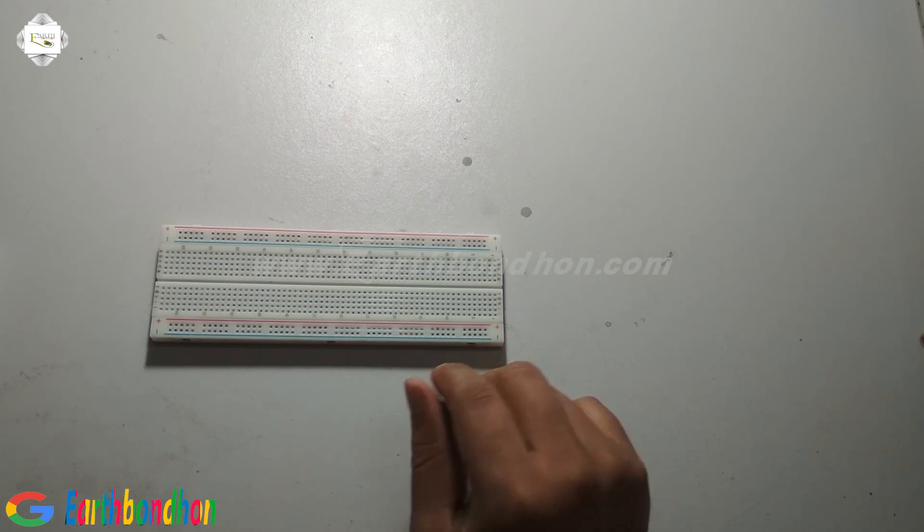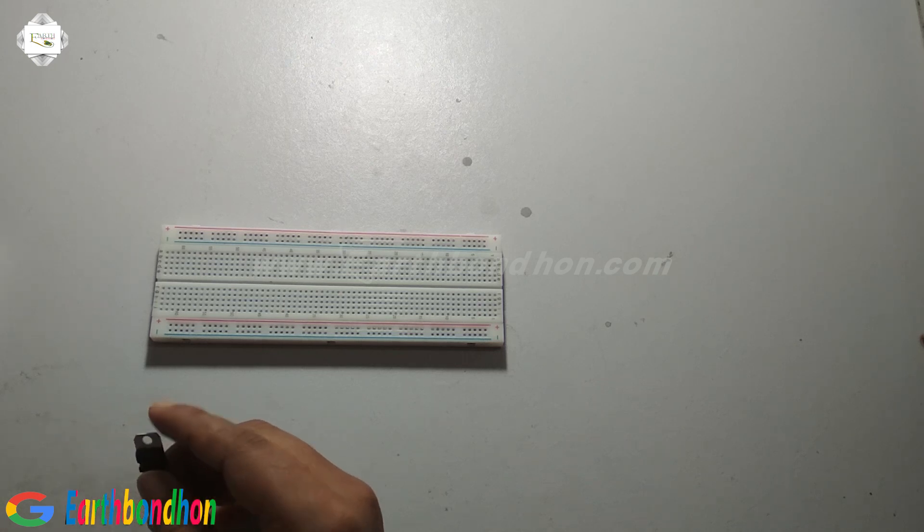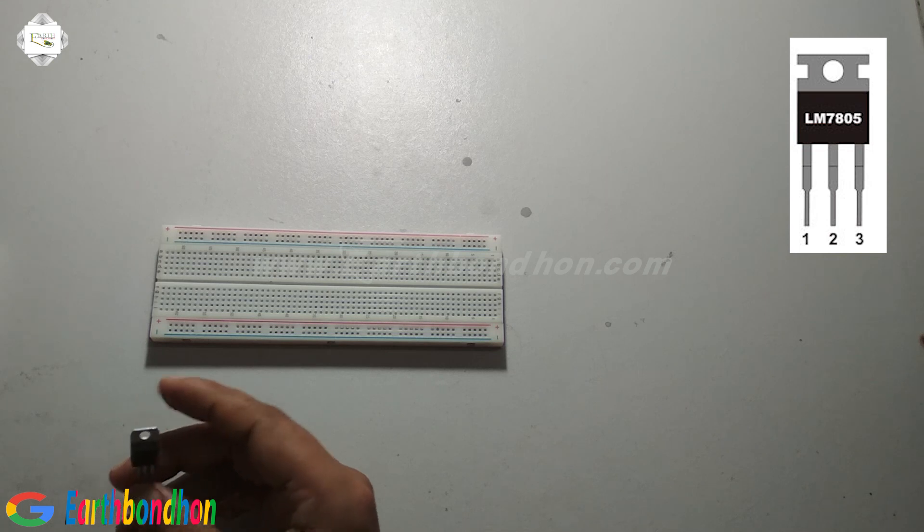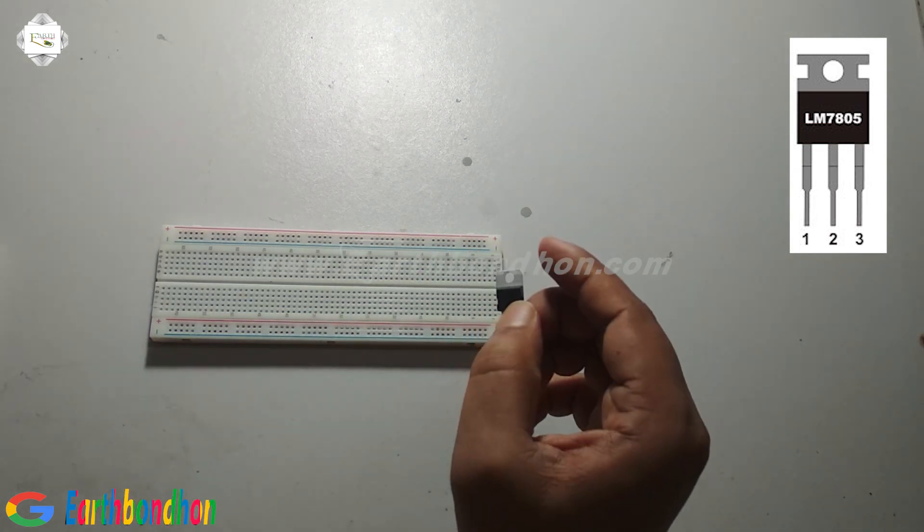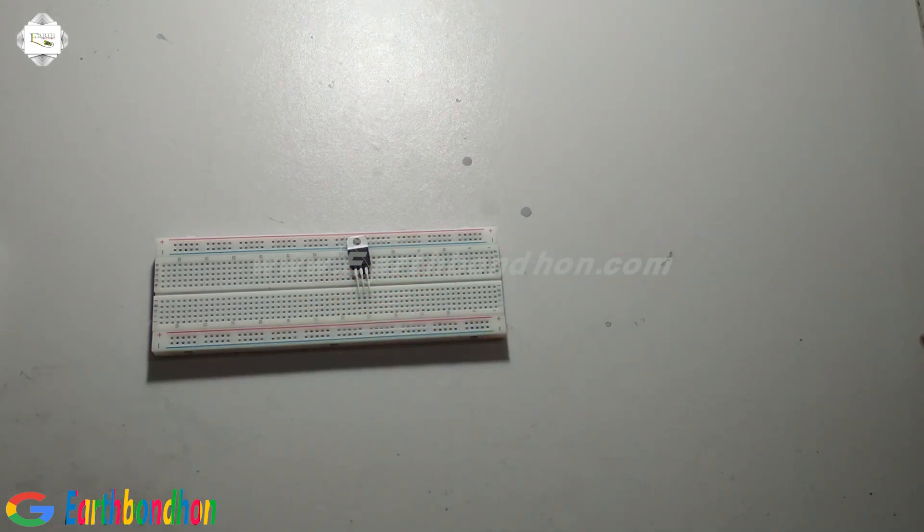This project needs first an IC. The IC number is 7805. This is the IC 7805 and 2 capacitors.